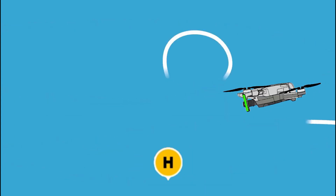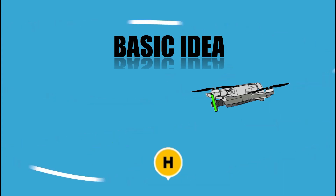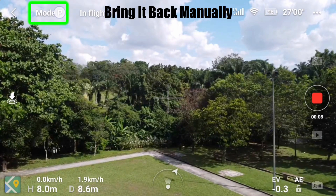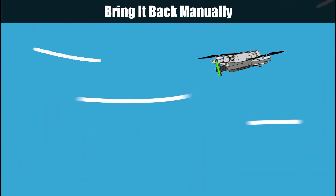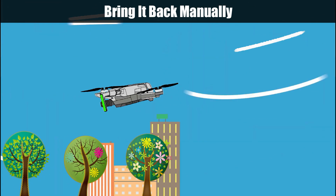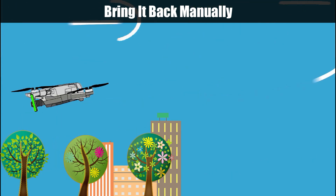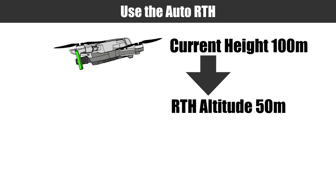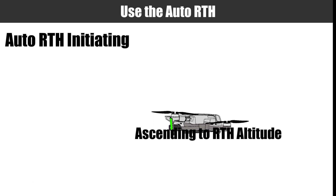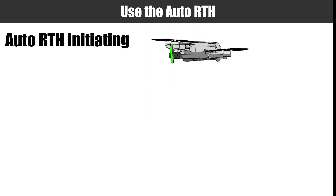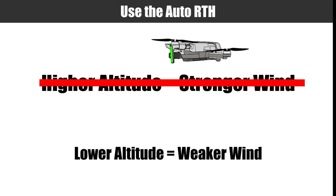In the case that you face a headwind situation returning to home, here are some basic ideas — just hope the wind speed is not stronger than 13 meters per second. Switch to sport mode, which has a maximum speed of 13 meters per second. If possible, lower the altitude as much as possible according to your surroundings while flying back, as lower altitude tends to have weaker wind. If you still prefer to use auto RTH, adjust the RTH altitude to be lower than your current height along a clear, obstacle-free path — this avoids the aircraft ascending to a higher RTH altitude with stronger wind.